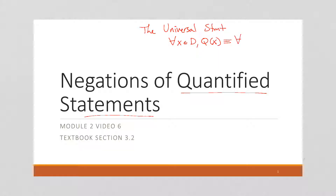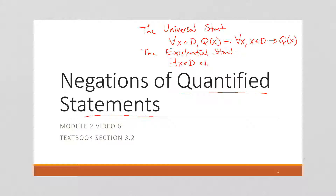This is equivalent to saying for all x, if x is in the domain, then our quantifier is true. So this is an if-then, an implication. We also talked about the existential statement, which said there exists an x in the domain such that q of x is true. Another way of writing this was to say there exists an x where x is in the domain and q of x is true. So both the universal statement and the existential statement are quantified statements.